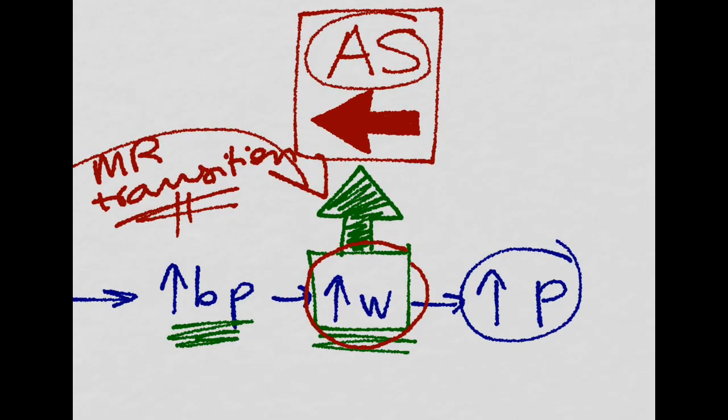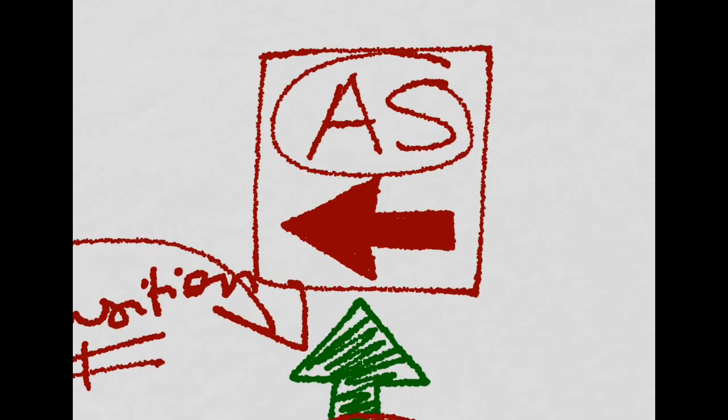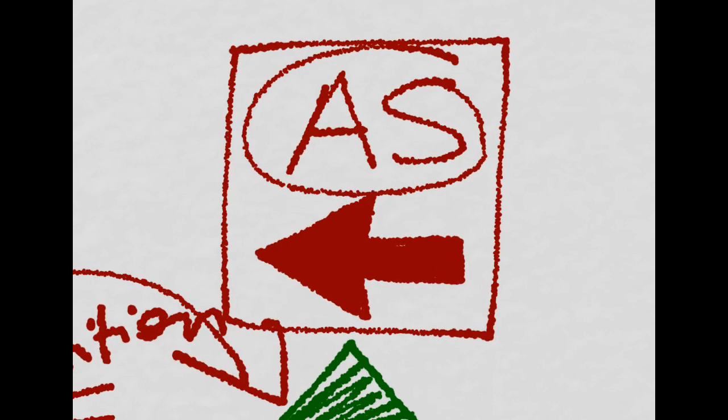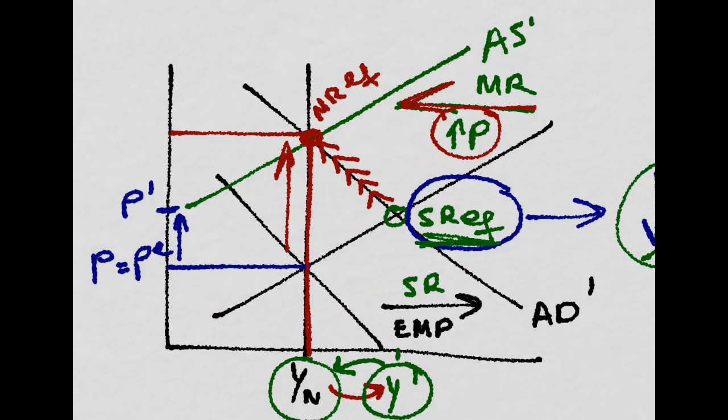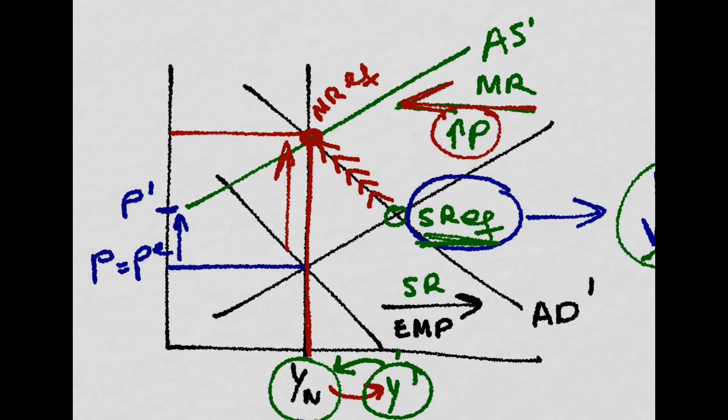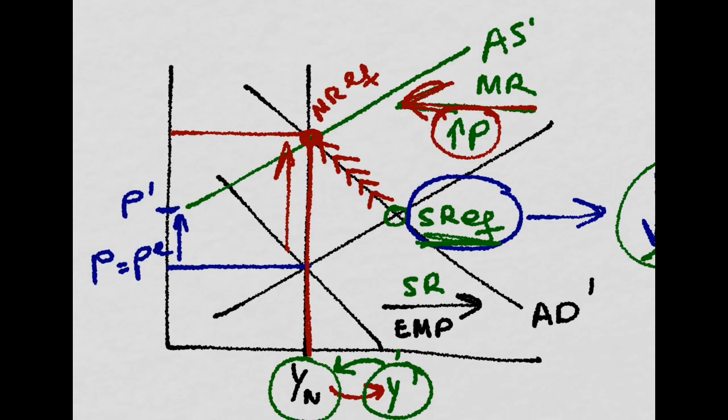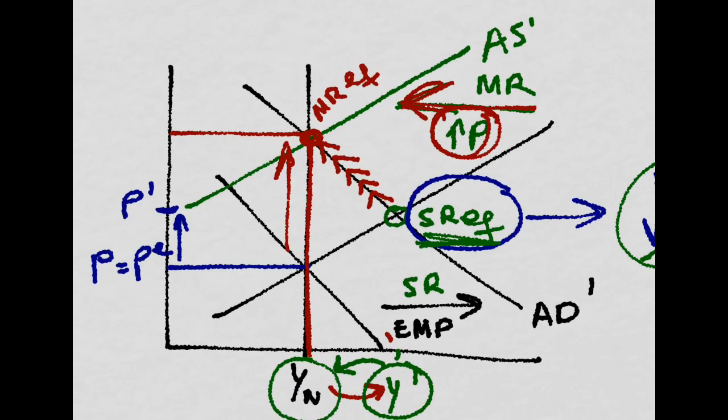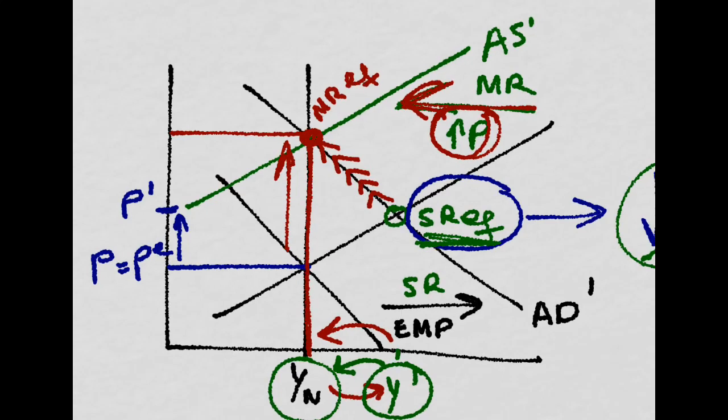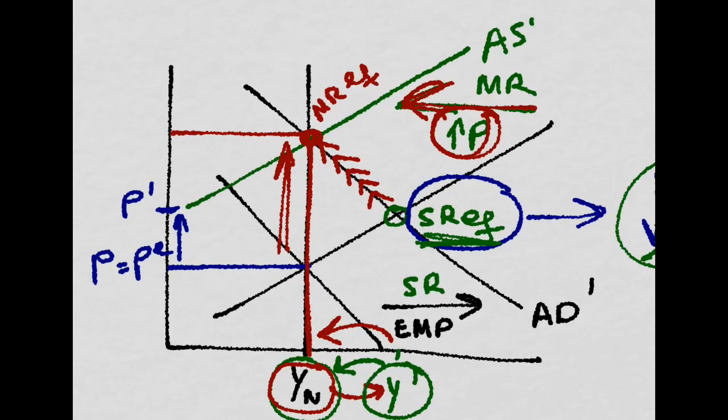But the key here is that firms face higher costs. That is, there is a shift to the left of the aggregate supply curve. Thus, in the medium run, this shift in supply, because of higher costs and higher prices, will make the economy return to its natural level of output, but with an increase in the price level.